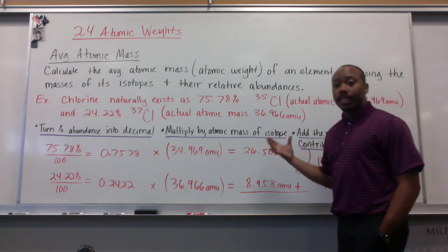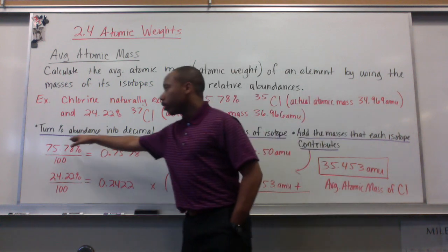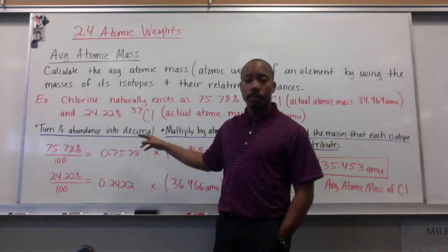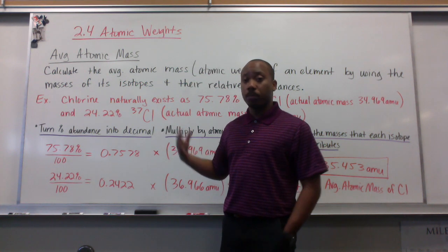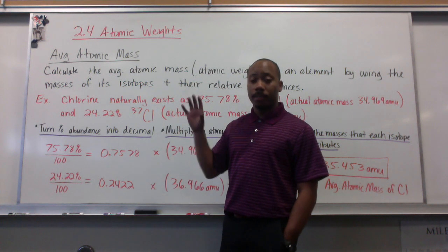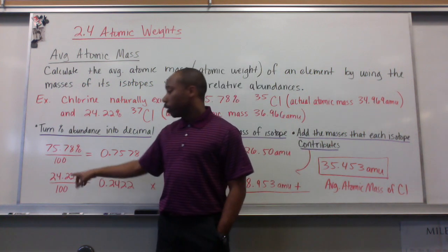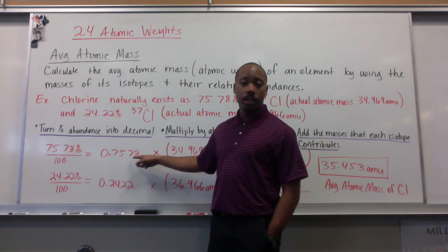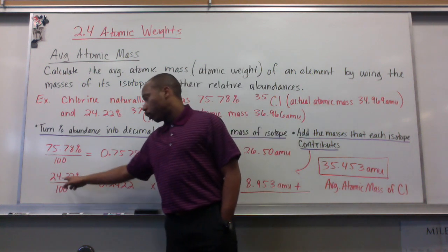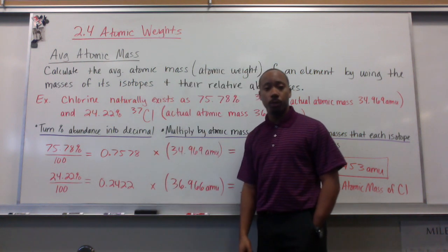Now we actually calculate it following this method here. First, turn your percent abundance into a decimal. We do that by dividing that percent abundance by 100. So 75.78 divided by 100 yields 0.7578, and 24.22% divided by 100 yields 0.2422.